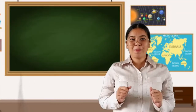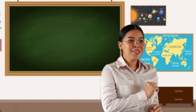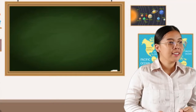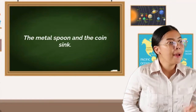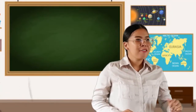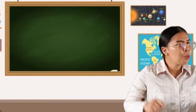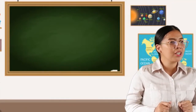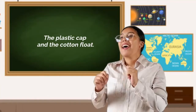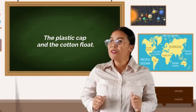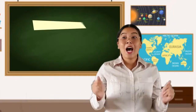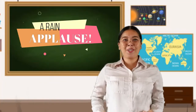Now let's proceed with group two. Share your observations from the activity. The metal spoon and the coin sink when placed into the water. Very good. How about the other objects? What happened to those objects when placed into the water? The plastic cup and the cotton float when placed into the water. Very good observation from group two!